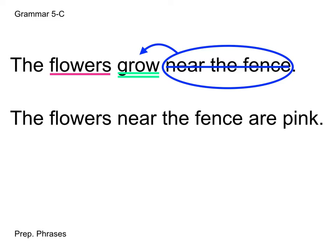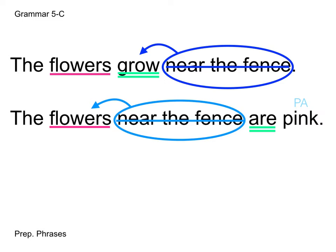Now let's look at the next sentence: 'The flowers near the fence are pink.' This is tricky because we have two nouns before the verb. To find our subject, we cross out prepositional phrases — 'near the fence' — leaving 'the flowers are pink.' Flowers is our subject, 'are' is a linking verb connecting flowers to pink, making pink the predicate adjective. The phrase 'near the fence' modifies flowers, telling us where they are, so we circle it and draw an arrow to flowers.